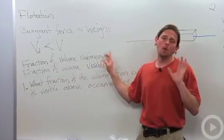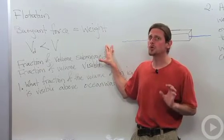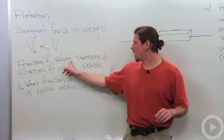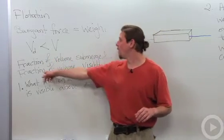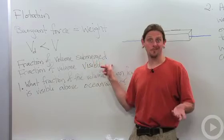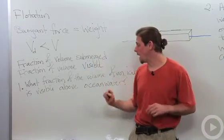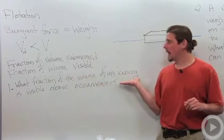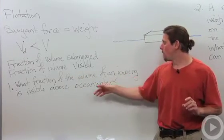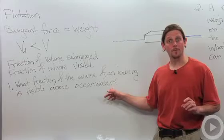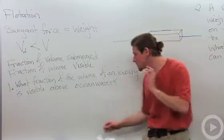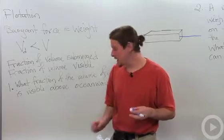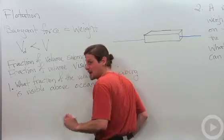Flotation problems usually ask one of two things: what's the fraction of the volume that is submerged, or what's the fraction of the volume that is visible above the surface? Let's look at a sample problem: what fraction of the volume of an iceberg is visible above the ocean water? To solve this we're going to use the ratio idea that we've seen before, and we can derive it again here.